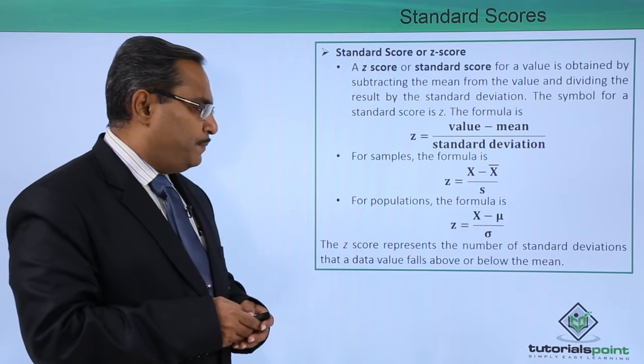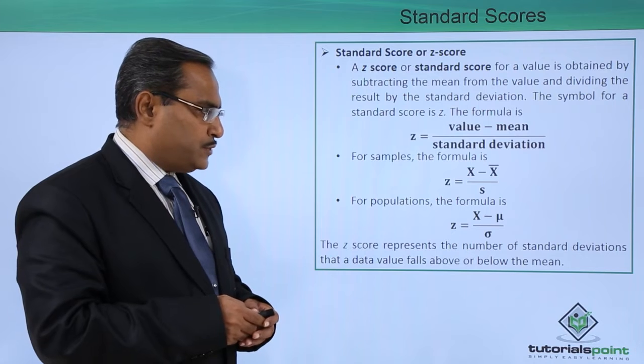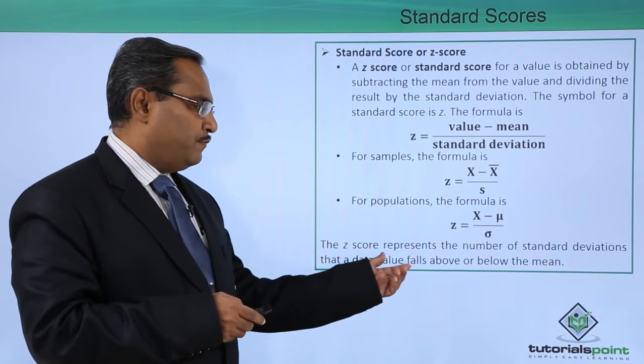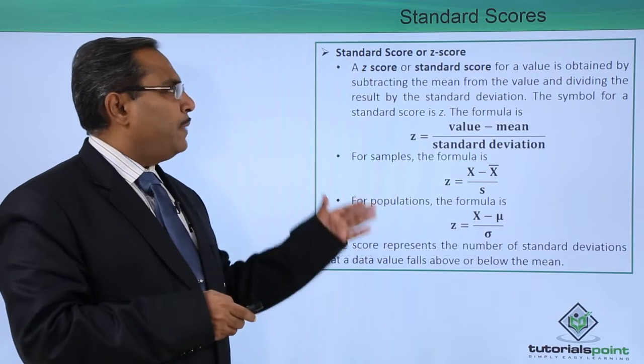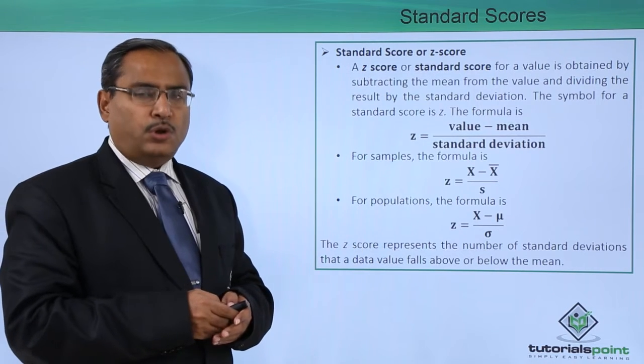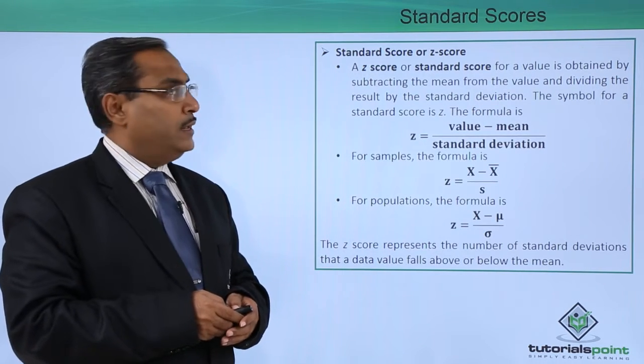The z-score represents the number of standard deviations that a data value falls above or below the mean. This is the purpose of the z-score, also known as the standard score.